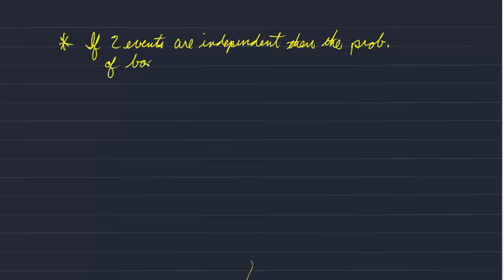If two events are independent, then the probability of both is written as P of A and B. This is when we multiply the probabilities. That's true when they're completely independent events with no dependence between them.